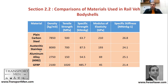Looking at density: steel is 7,850 kg/m³, austenitic stainless steel is around 8,000 — slightly higher. Aluminium alloy is much lighter at 2,750, and glass fiber reinforced polymer is 2,100. For tensile strength: steel is 500 MPa, stainless steel is 700, aluminium alloy is lighter but not as strong at 150, and glass fiber reinforced polymer is 1,020.